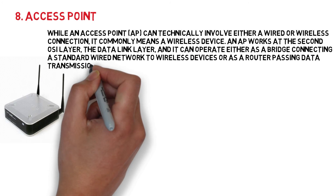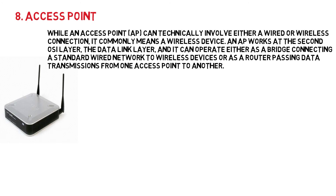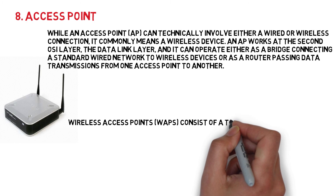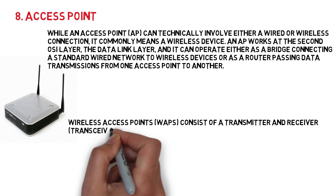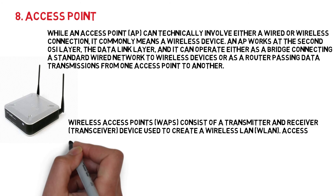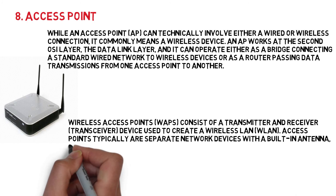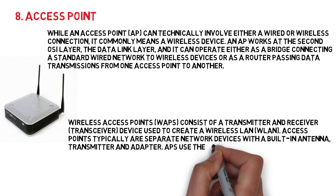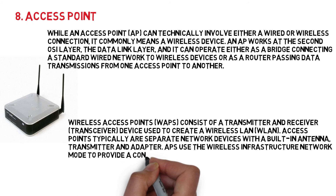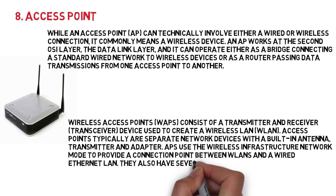Wireless access points consist of a transmitter and receiver device used to create a wireless LAN. Access points typically are separate network devices with a built-in antenna, transmitter, and adapter. APs use the wireless infrastructure network mode to provide a connection point between WLANs and a wired Ethernet LAN. They also have several ports, giving you a way to expand the network to support additional clients.